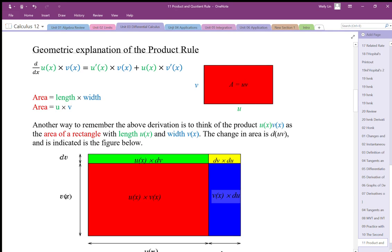So when we talk about the product of two functions, we can think of one of the factors as a length, the other factor as a width. And really what we're asking is: the change in u times v means we're asking how does the area change? How does the area change when we increase the length and width?